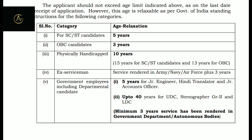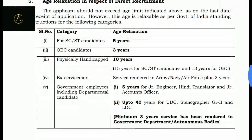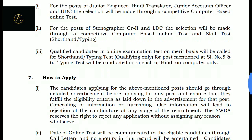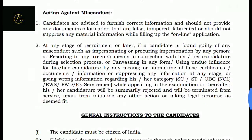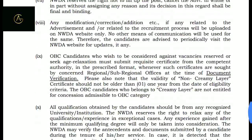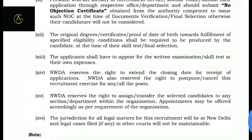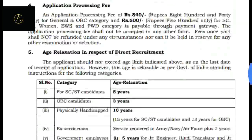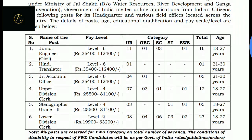Age relaxation is applicable for EWS and non-creamy layer, 10 years for physically handicapped, and for Ex-Servicemen and government employees as per rules. Selection criteria includes a computer-based test and a typing test. You must apply through online application. Check the official notification for all important conditions. If you have any questions, post a comment below. Apply now — there are many postings available. Thanks for watching and please share!